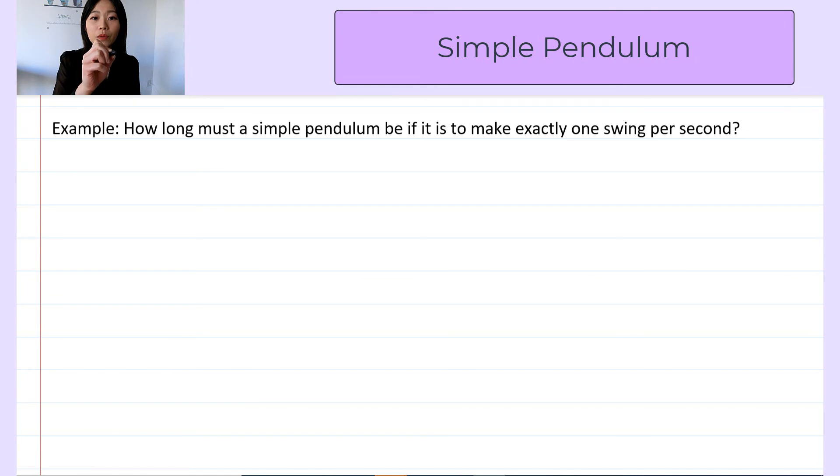And in this example, we want one swing to be one second. Which means one period, which is two swings, will be two seconds. So the period T is two seconds, because one swing is one second and it is half of the period.